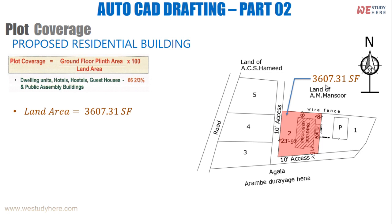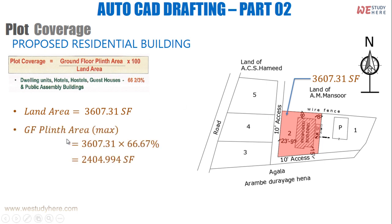Now, within this land, what is the maximum plinth area I can cover? That is 66.67% of the land area. So the maximum ground floor plinth area equals 66.67% of 3,607.31, which gives 2,404.99 square feet. That is the maximum plinth area allowed.